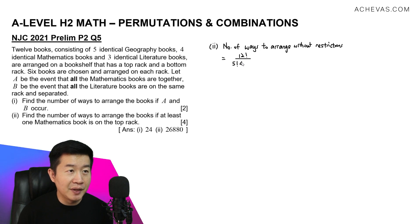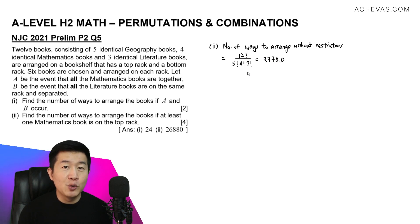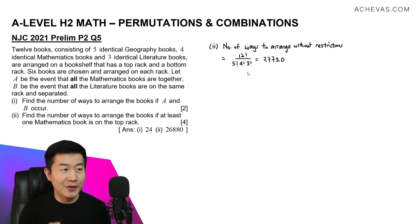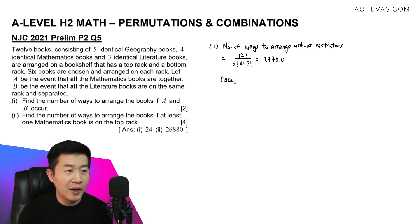This gives us 27,720 total arrangements. Now I'll work with the complement cases — specifically the case where there are no mathematics books in the top rack at all, since the question asks for at least one. So we work with zero math books in the top rack.